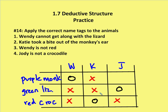We've used the facts to make conclusions. Wendy cannot get along with a lizard, so she's not the green lizard. Wendy is not red, so she's not the red crocodile. Therefore, Wendy must be the purple monkey. If Wendy is the purple monkey, then Katie and Jody have to be either the green lizard or the red crocodile. Since Jody is not the red crocodile, she must be the green lizard. And if Wendy is the purple monkey and Jody is the green lizard, then Katie must be the red crocodile. We used deductive structure and a table to figure out the answer.